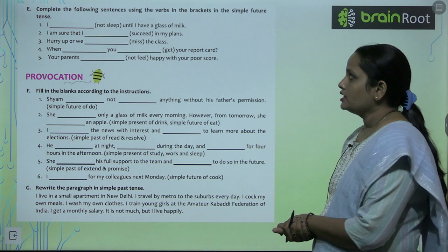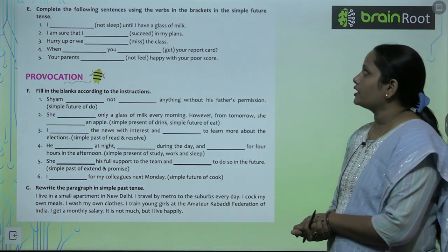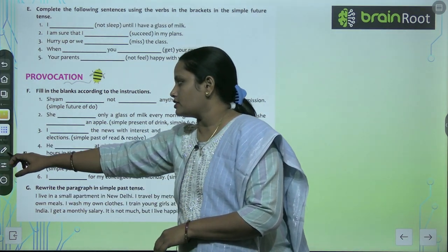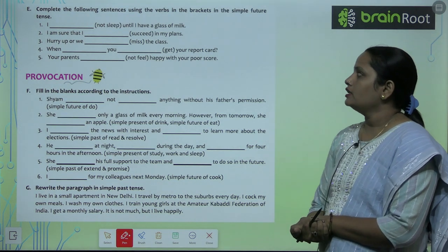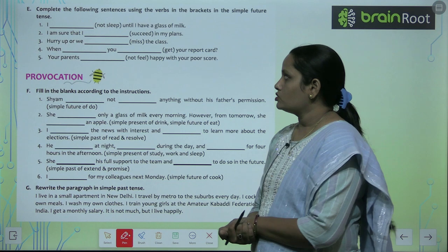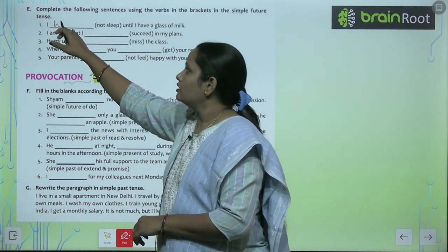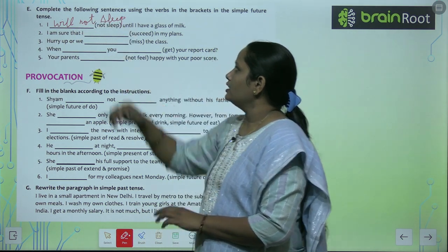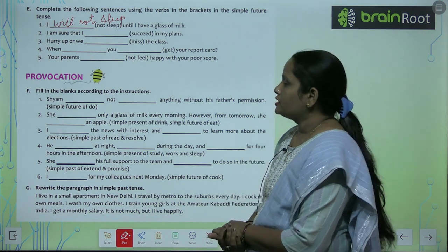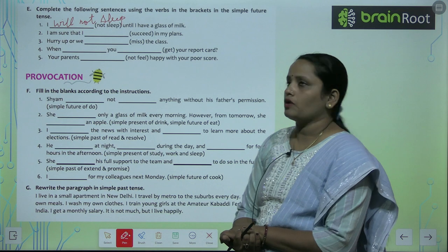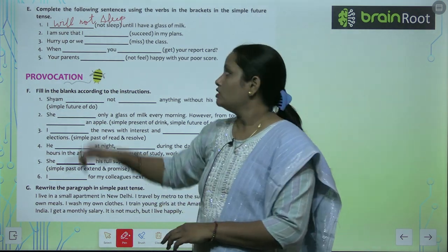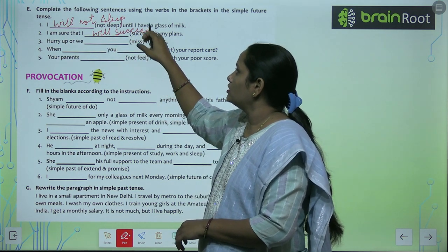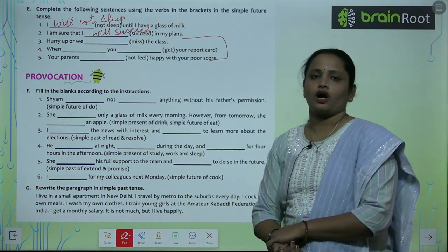Now let's move on to Exercise E — complete the following sentences using the verb in the bracket in the simple future tense. 'I will not sleep until I have a glass of milk.' The second one: 'I am sure that I succeeded in my plans' — here we will write 'I will succeed in my plan.' Do the remaining three questions on your own.